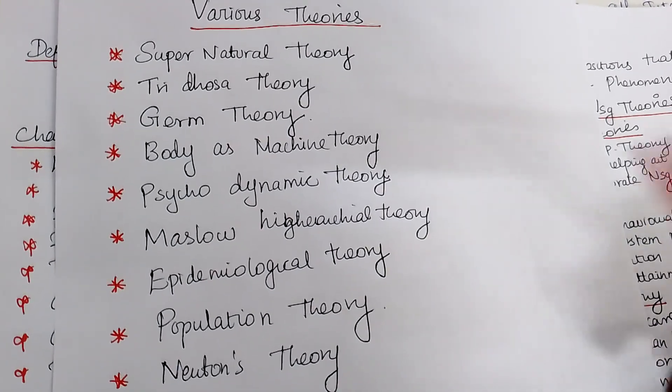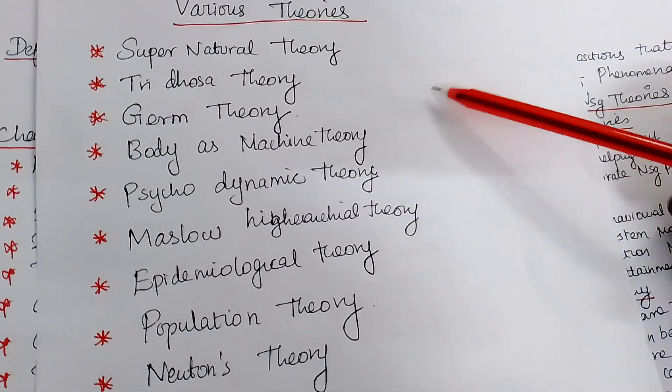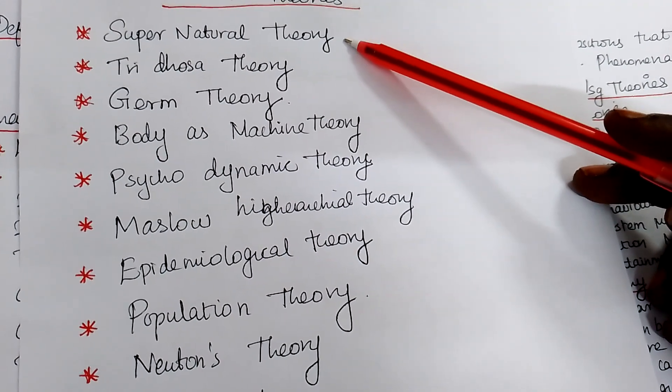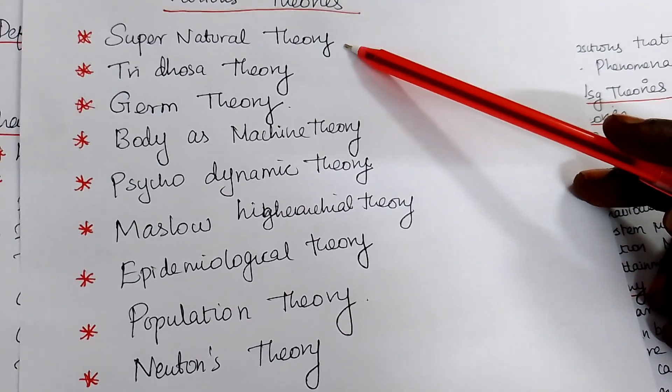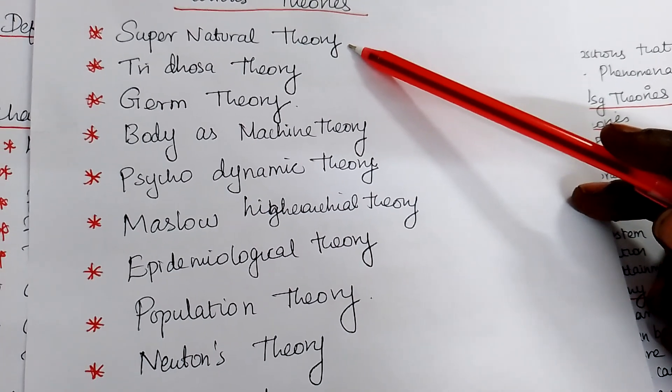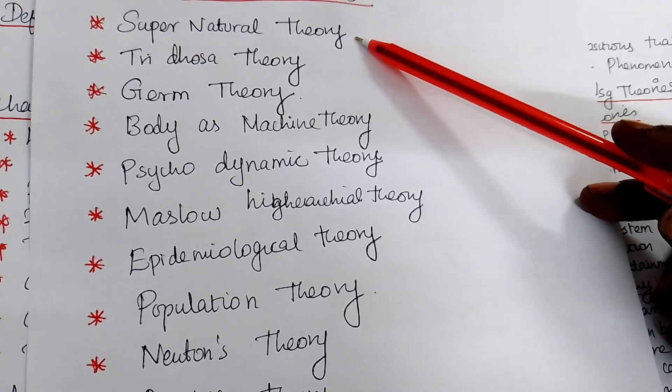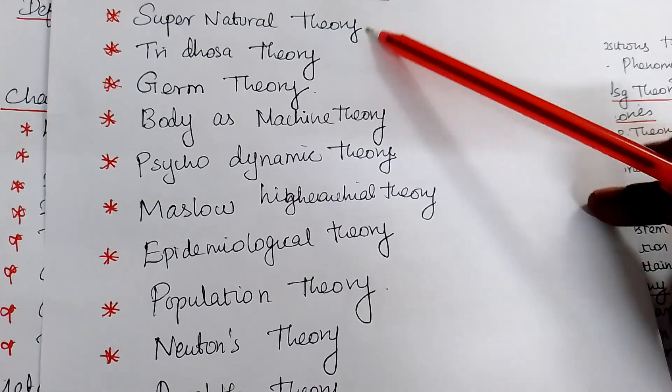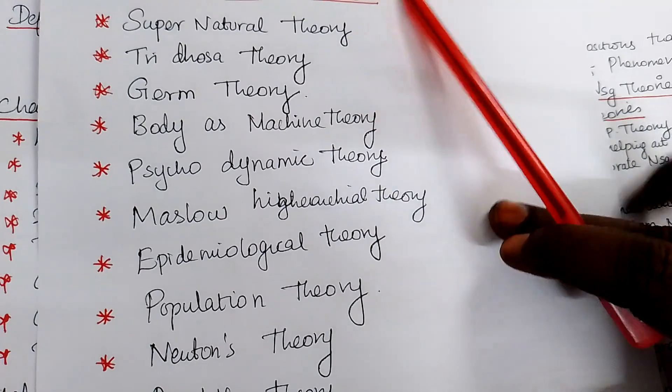What happened? There are various theories existing in medical also. So in the beginning, olden days, if you see supernatural theory, the health and illness, anyone get a disease, they will tell, oh, you have done something wrong. The sin, the God has punished you. The disease is coming from the cursing from the Lord. They told it's a supernatural theory.